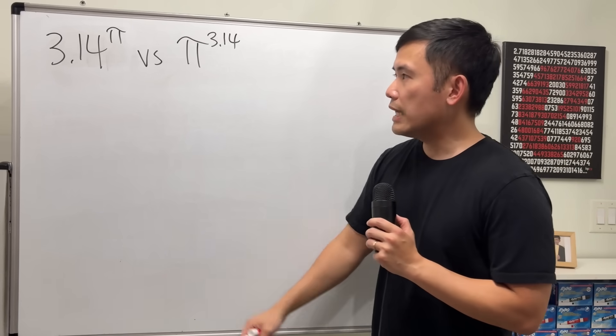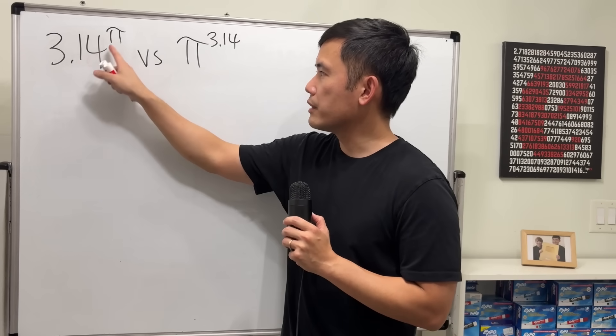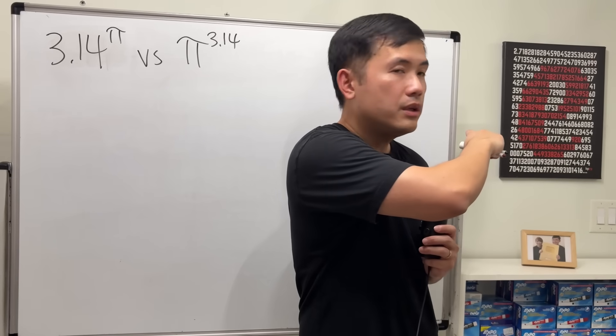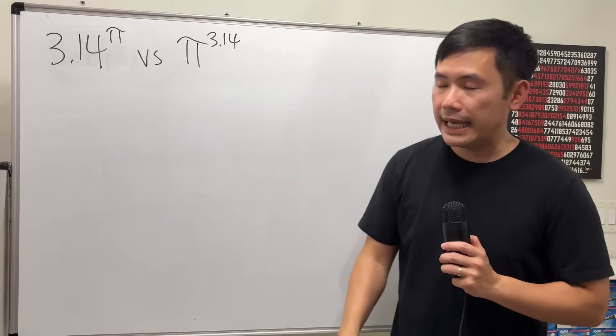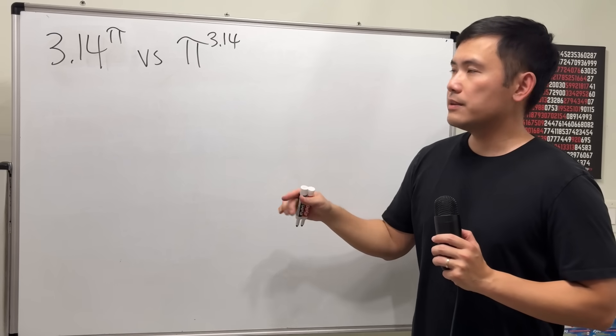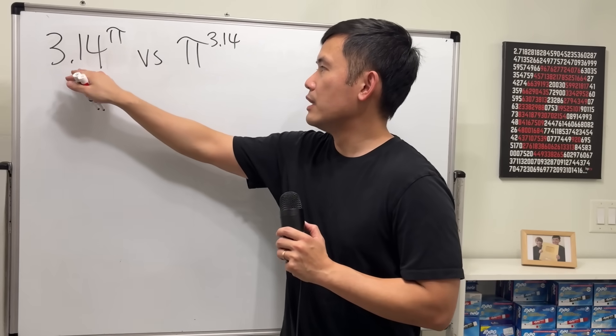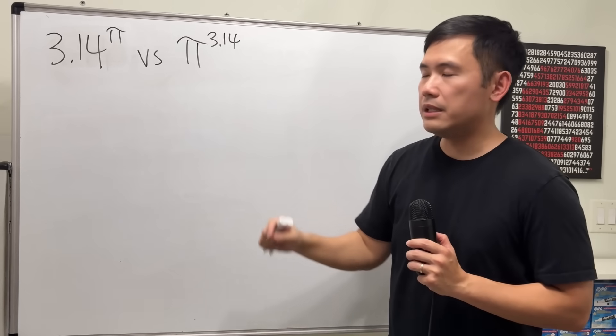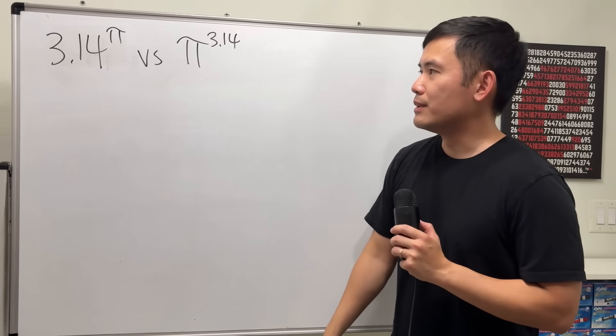First, we just have to make sure that both numbers right here are greater than or equal to the number e, which is about 2.718. If that's the case, which we do have in this case, 3.14 is bigger than e, and I guess π is bigger than e.